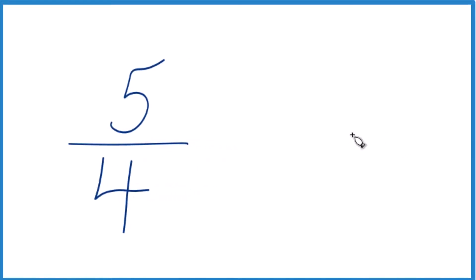You could take 5, see how many times 4 goes into 5. So we'll just divide 4 into 5. We know it goes in there once. 1 times 4 is 4. Subtract, and we have 1 left over.